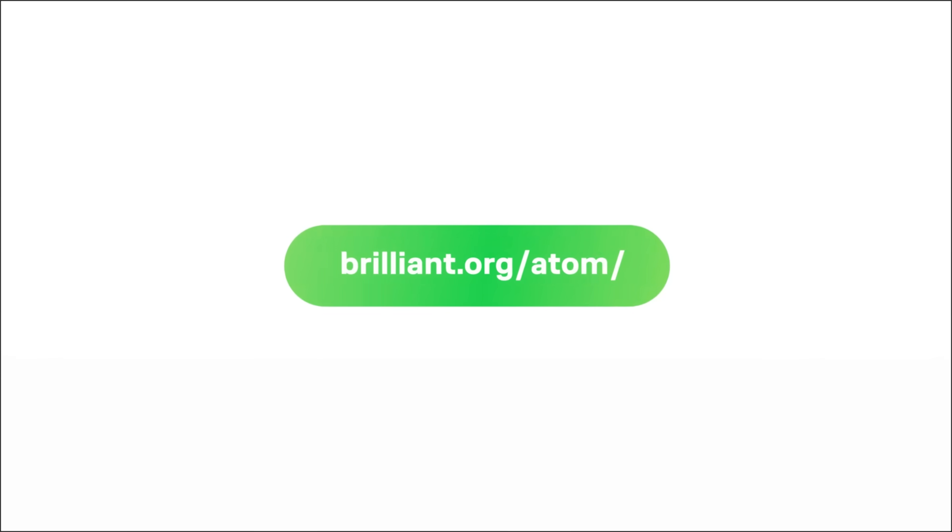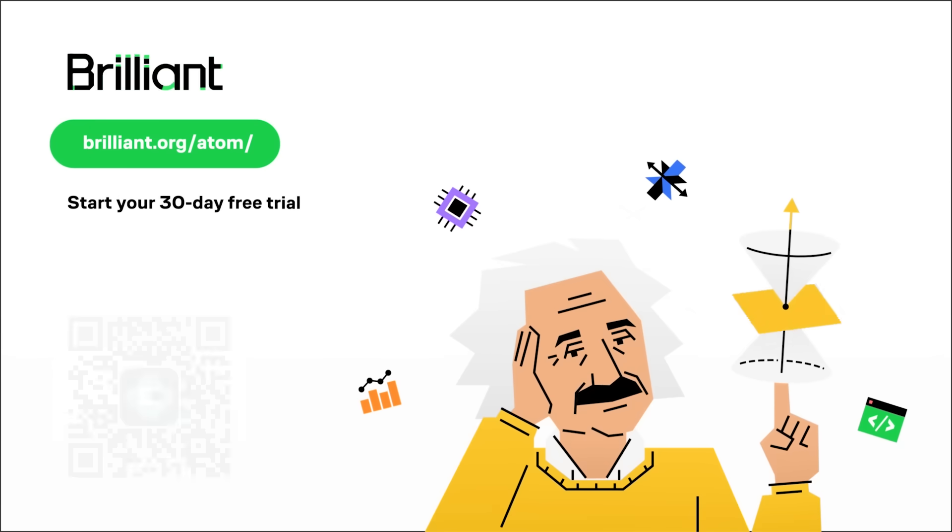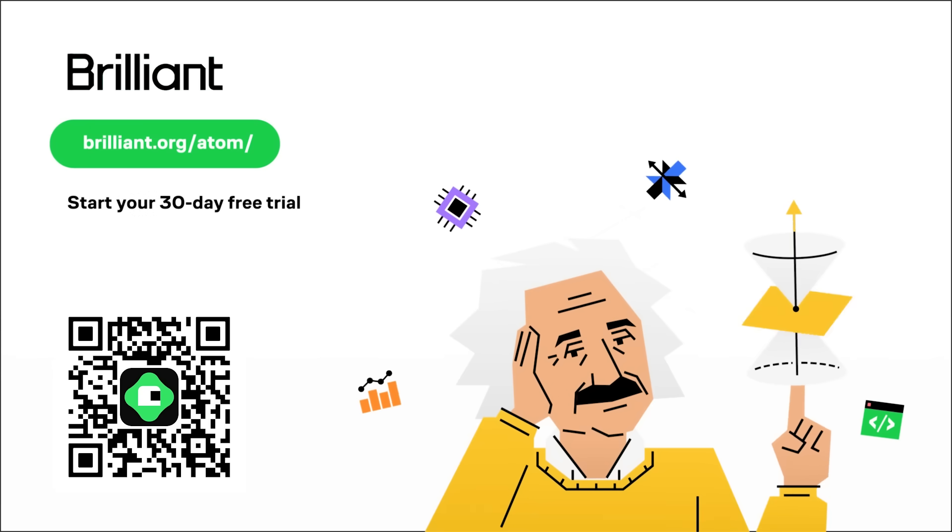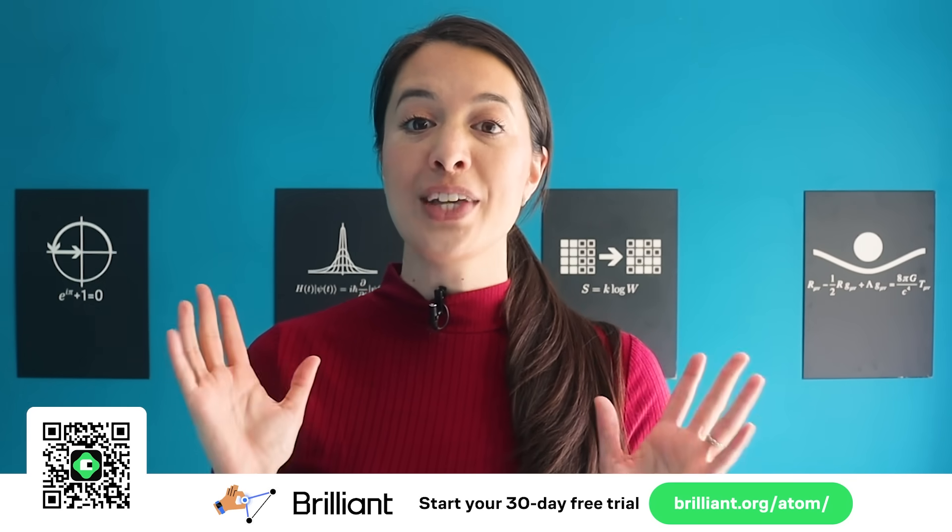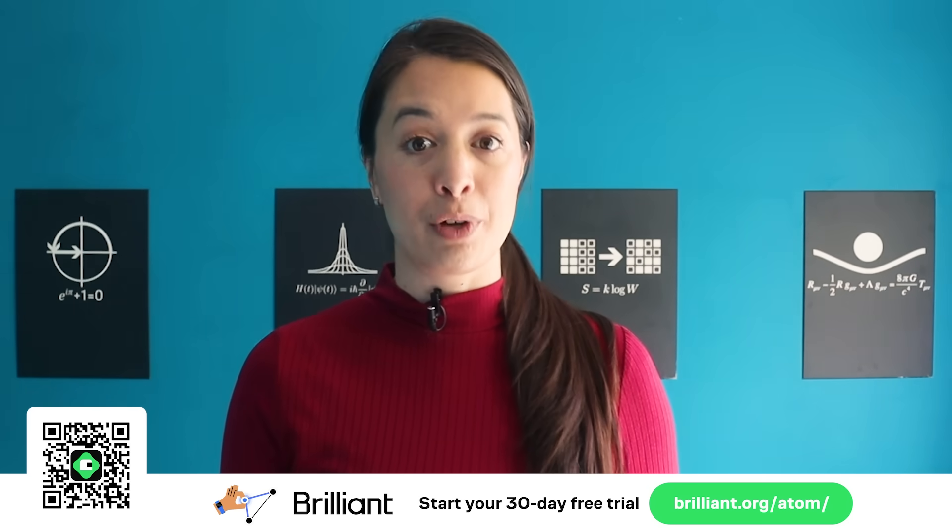To try everything Brilliant has to offer for free for a full 30 days, visit brilliant.org slash atom or scan the QR code on screen. Or you can click the link in the description. You'll also get 20% off an annual premium subscription.